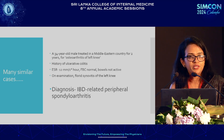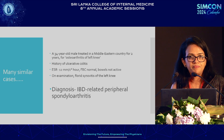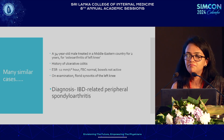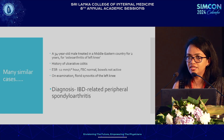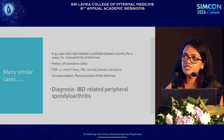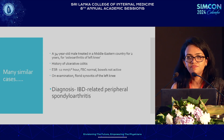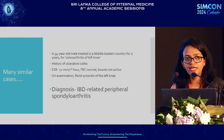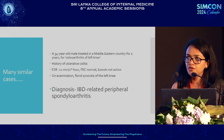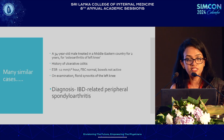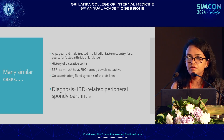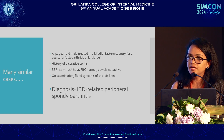Why were the inflammatory markers normal? Remember, in about 60% of cases of spondyloarthritis — the previously so-called seronegative arthritis, which we no longer call that — in about 60%, inflammatory markers are normal. Normal inflammatory markers do not exclude a diagnosis of inflammatory arthritis.